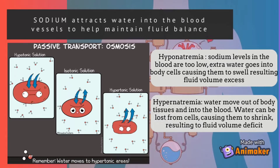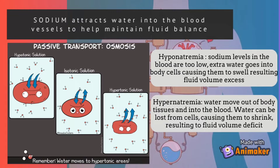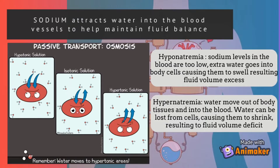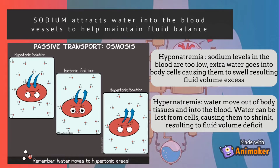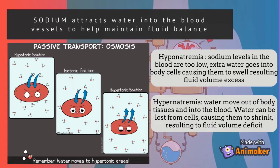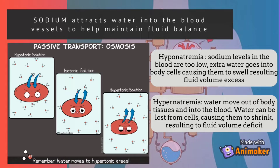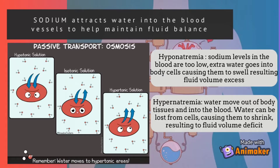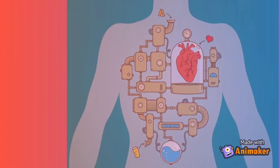Hyponatremia occurs when sodium levels in the blood are too low. Extra water goes into the body cells, causing them to swell, resulting in fluid volume excess. Hypernatremia occurs when water moves out of body tissues and into the blood, so water can be lost from cells, causing them to shrink, resulting in fluid volume deficit.